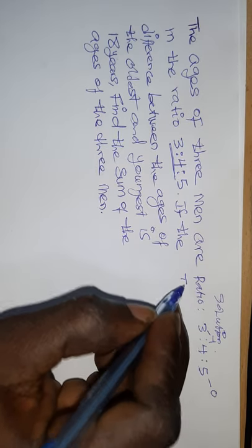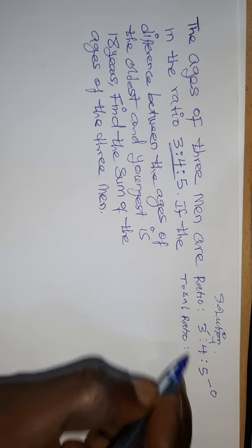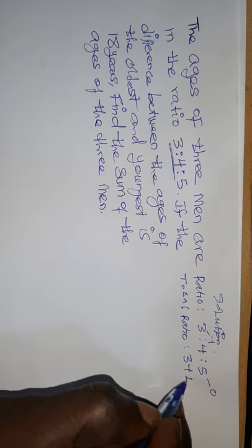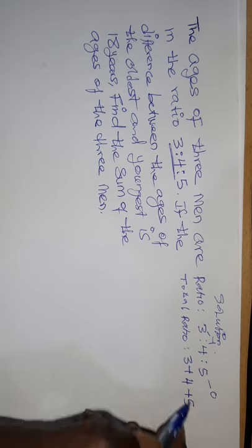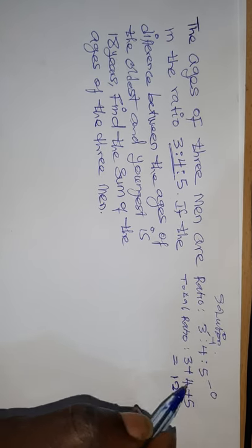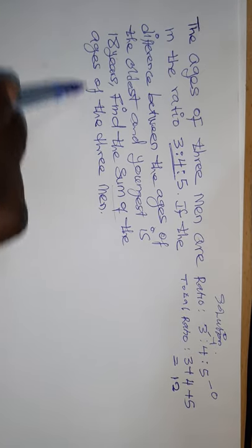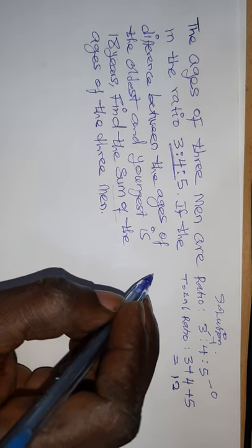Now let's find what will be our total ratio. Total ratio is 3 plus 4 plus 5, which gives us 12. So we already know our total ratio. We are told to find the sum of the ages of the three men.